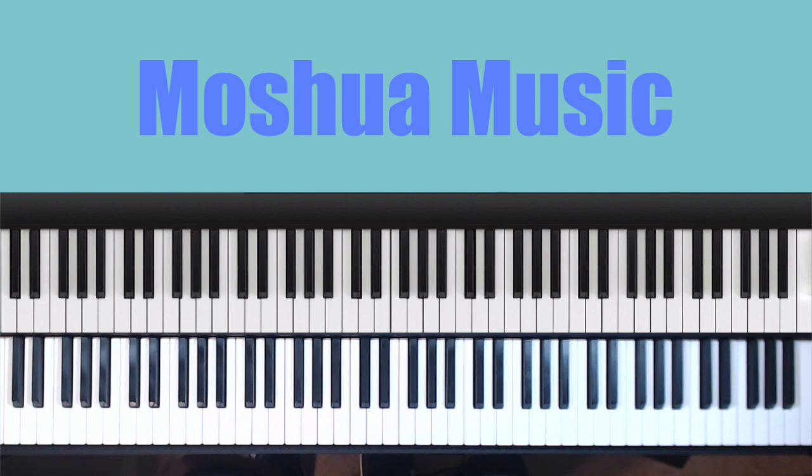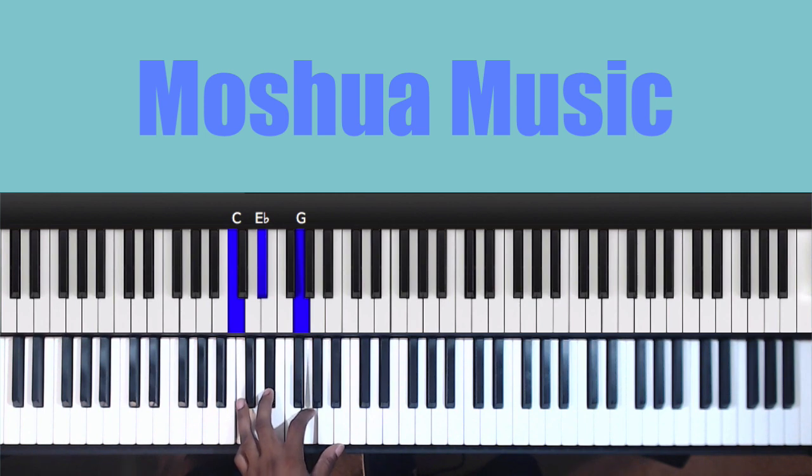So let's just take a look. We will use a C minor 11 as a demonstration. C minor 11, the C minor is C, E flat, G.